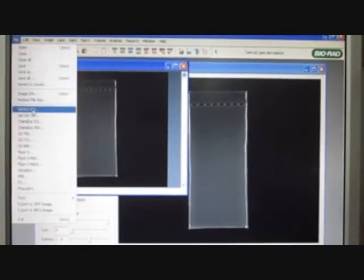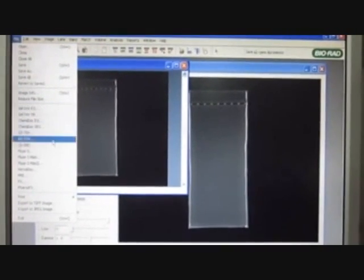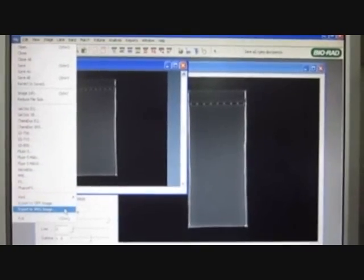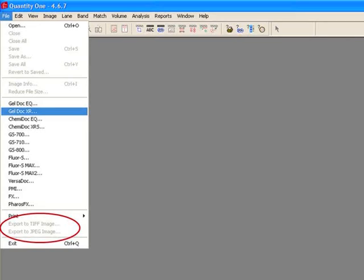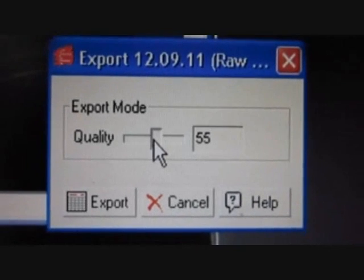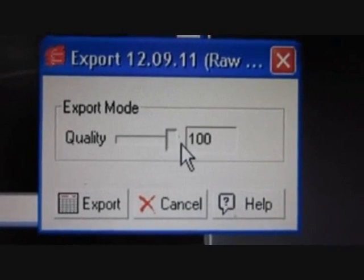Once the image has been saved, this image has to be exported to JPEG file format. Select Export option from the File menu. In this, select Highest quality export and export the image.